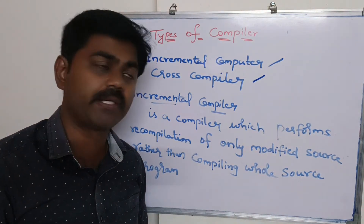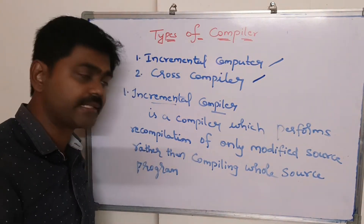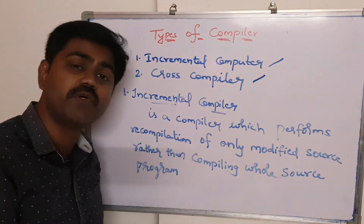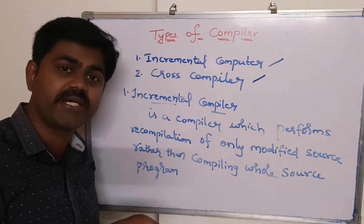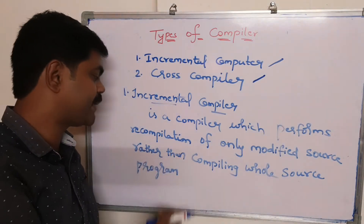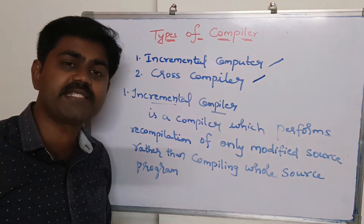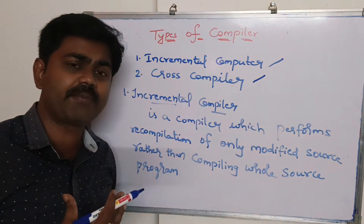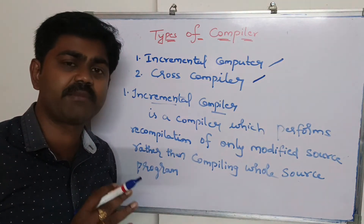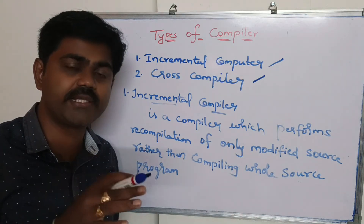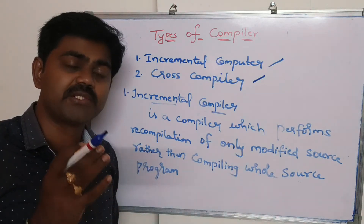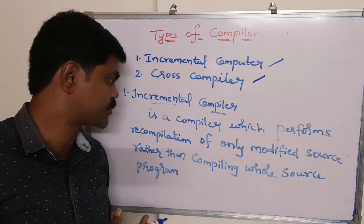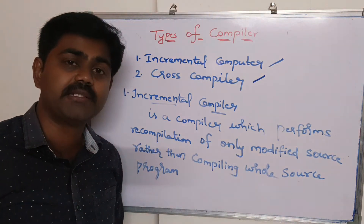What is an incremental compiler? An incremental compiler is a compiler which performs the recompilation of only the modified source. The source which is modified is recompiled rather than compiling the whole source program. So if I modify some piece of code in the source, only that modified source will be compiled rather than compiling the entire source program. This is called incremental compiler.